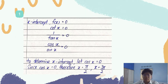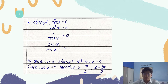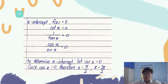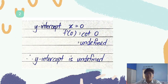First, we find the x-intercept by setting f(x) equal to 0. So cot x equals 0, rewritten as cos x over sin x equals 0. To determine the x-intercept, we let cos x equal 0. Since cos x equals 0, x equals π/2 and 3π/2. So the x-intercepts of the function are π/2 and 3π/2.